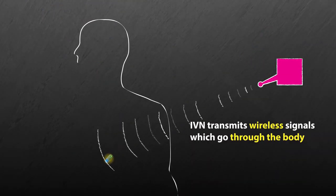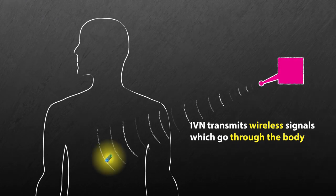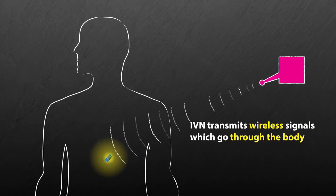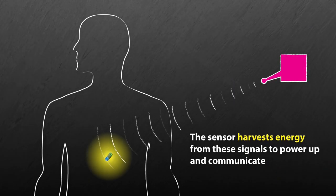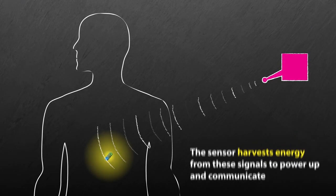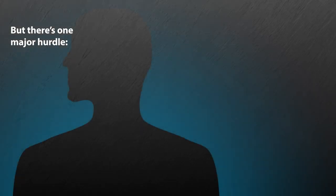When IVN transmits a wireless signal, the signal goes through the body and reaches the tiny implanted sensor. The sensor harvests energy from these signals to power up and communicate. But, there's one major hurdle.